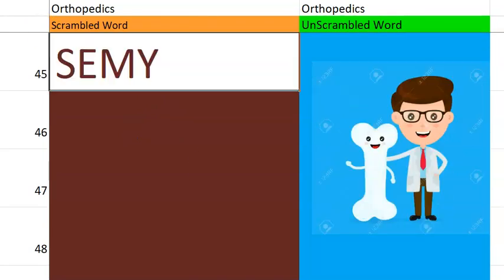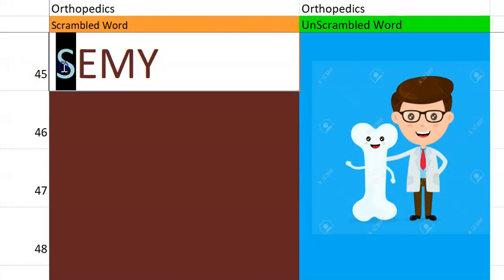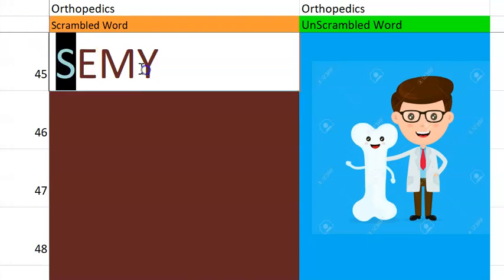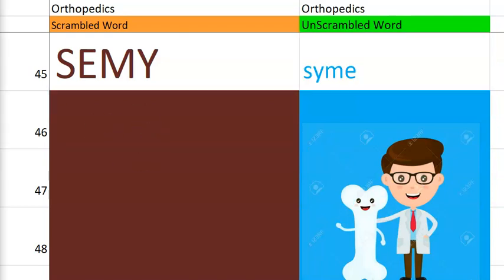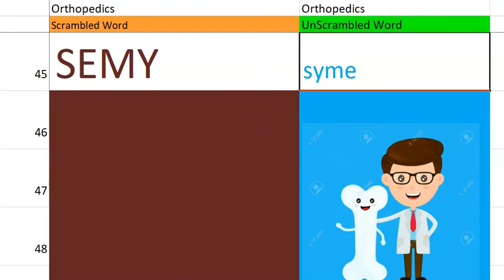Now let's go to the 45th one. In orthopedics, what is this word? Starts with S-Y-M-E. What is Syme? It is an amputation done through the ankle joint. Syme amputation.